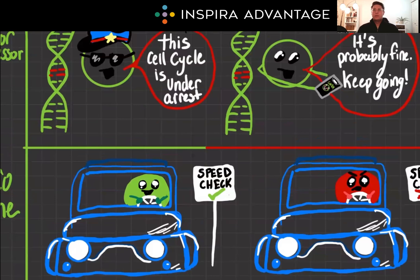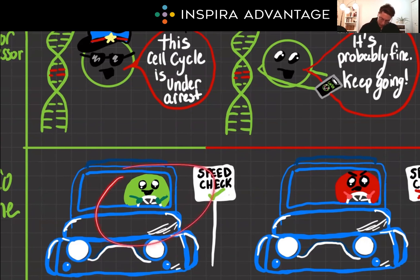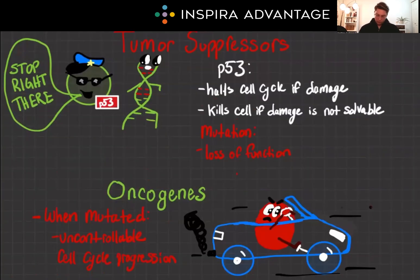Moving on to oncogenes — these are genes that typically promote growth in cell cycling. If the genes are mutated in some way that causes them to become overactive or expressed at higher levels, then we start to get uncontrolled cell growth, aka cancer. To keep using the car metaphor, this is like putting the gas on the cell cycling. As we can see here, we've got our green good oncogene — it's working and functioning, slowing down when it should. But when we mutate it, it ignores the signals and flies through, causing cancer and cell cycling, eventually causing problems.